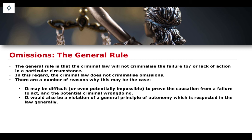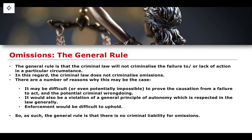In a similar way, criminalizing omissions also seems to violate the general principle of autonomy, which is respected in law generally — the idea that we, as autonomous individuals, have the ability to make decisions about what to do in a particular circumstance. To suggest that a failure to perform an act gives rise to criminal liability would seem to be a violation of this principle. It would also be very difficult to uphold and enforce a general rule criminalizing any conduct pertaining to a failure to act. So the general rule is that there is no criminal liability for omissions.